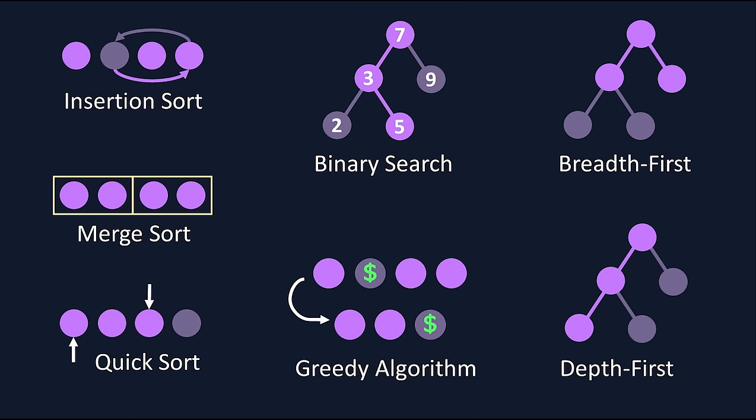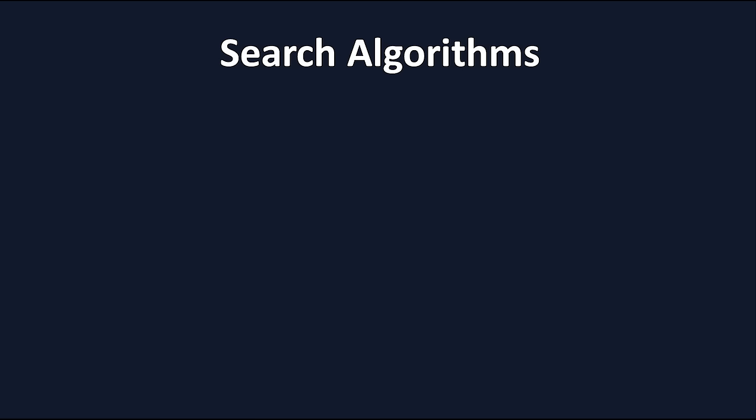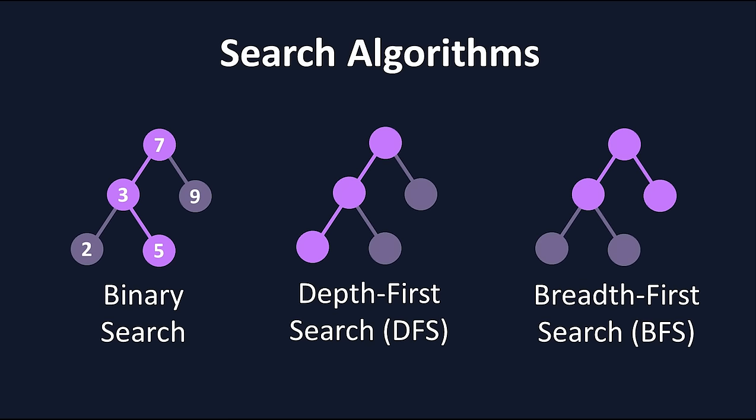These are the seven most important algorithms you have to know if you're preparing for coding interviews. We'll start off with the three search algorithms: binary search, depth first search, and breadth first search.